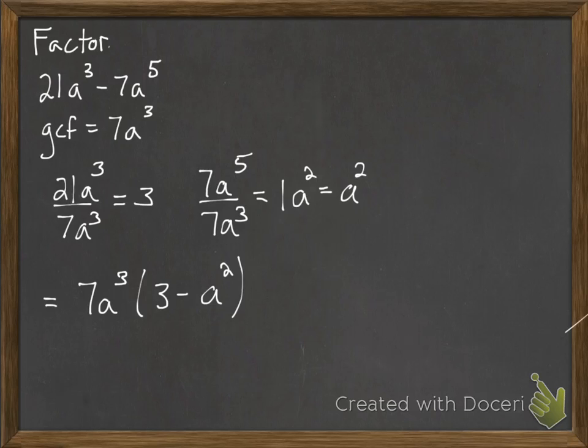Now we talked about some other factoring methods later on. This actually can't be factored any further. So our answer is 7a³ times 3 minus a². Hope this helps you out if you're having a little trouble with factoring out common factors.